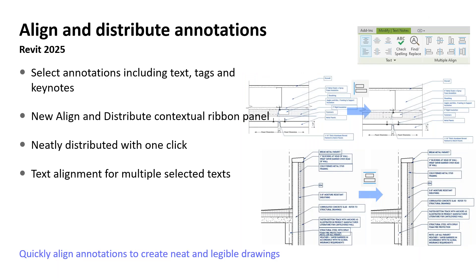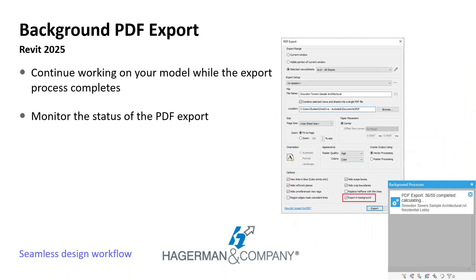You can now align and distribute multiple keynotes, text notes, and tags — I'm pretty happy to finally have this feature, and I know I'll use it a lot. Previously, when exporting a PDF from Revit, your Revit session would need to complete the PDF export process before you could continue working. Now the PDF export process can be run as a background process, allowing you to continue working on your model while the export process completes.